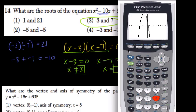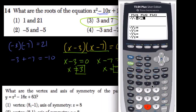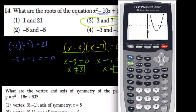On the graphing calculator, you can do this as well. You can enter in, we'll clear this off, x squared minus 10x plus 21, and then graph it.